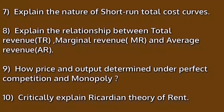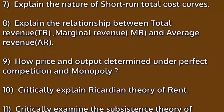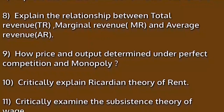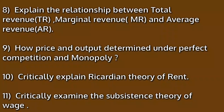How are price and output determined under perfect competition and monopoly? Critically explain the Ricardian theory of rent. Critically examine the substance and study of economics.